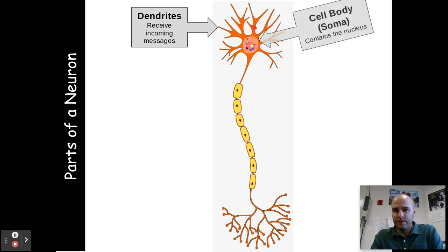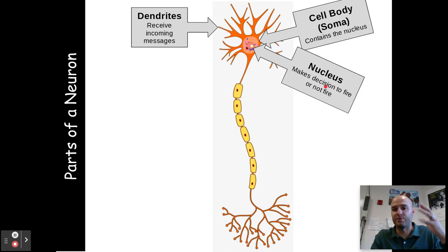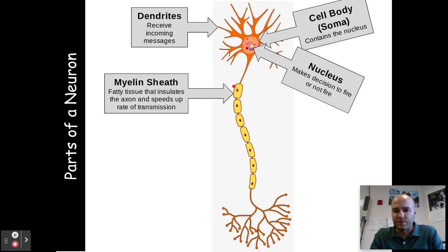Dendrites receive incoming messages from other neurons — they are the receptors. As they receive those messages, they send that message down to the cell body or the soma, which contains the nucleus. If the message that the nucleus receives stimulates the neuron enough, it will make the decision to fire or not fire. If it reaches the absolute threshold, it will fire a message down the neuron. You have myelin sheath — these little yellow marshmallow-looking things.